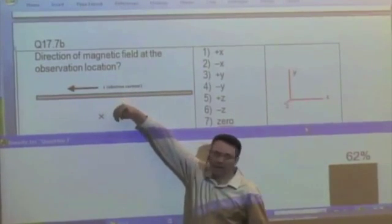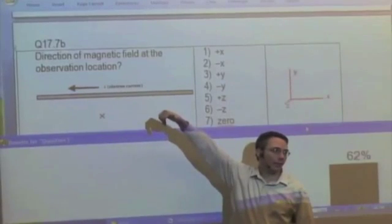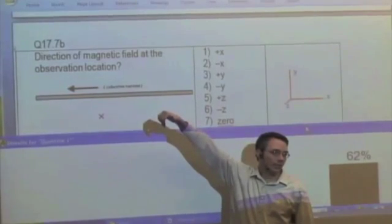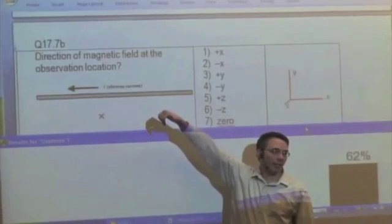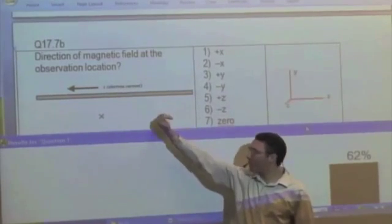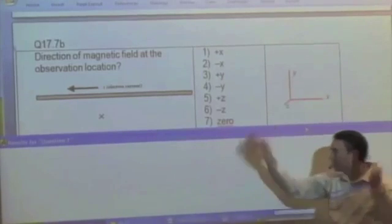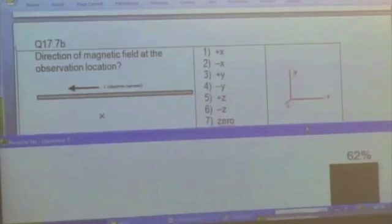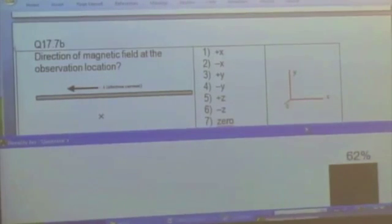V cross R hat is out, but you have to flip it because you're multiplying by a charge, which is negative. So no matter how you slice it, it's got to give you a magnetic field pointing into the board.